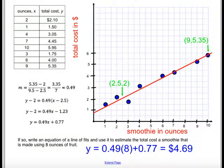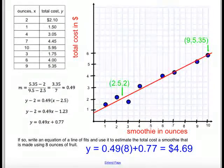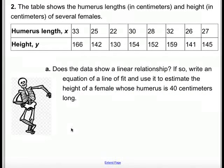I hope this has been helpful. Let's try one more. The other one is not in any way related to this one. The second example is comparing the humerus length and height of a female. We're looking for a relationship between the two. So they measured a bunch of humoruses, and they measured the height. Once again, the question is, does the data show a linear relationship? If so, write an equation with a line of fit and use it to estimate the height of a female whose humerus is 40 centimeters long.